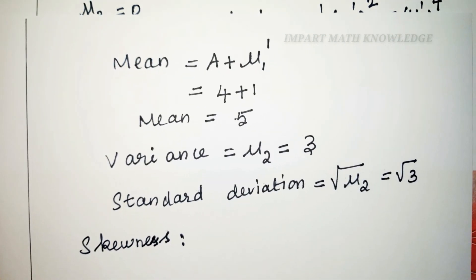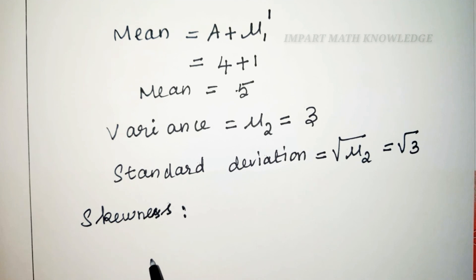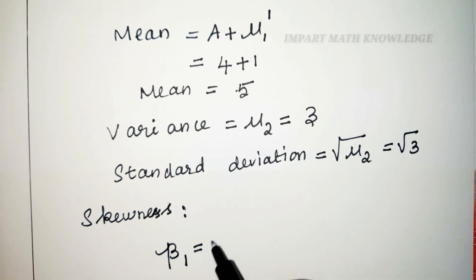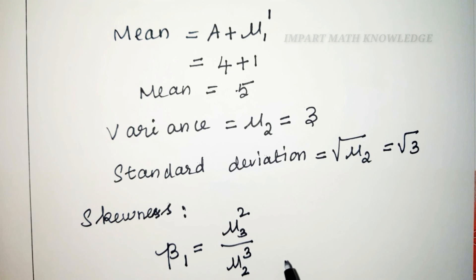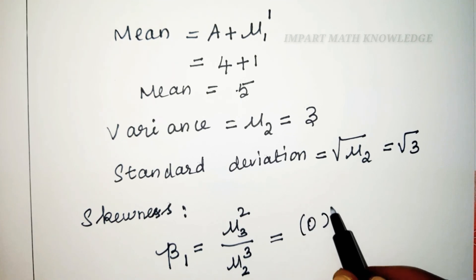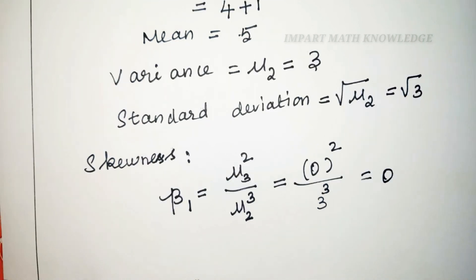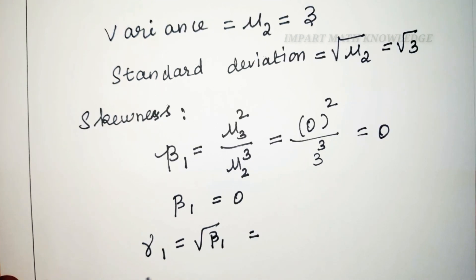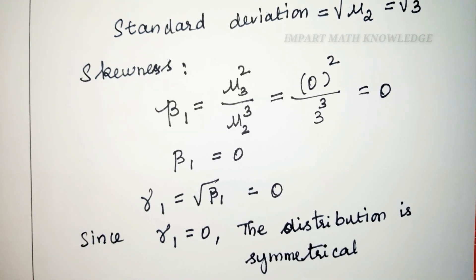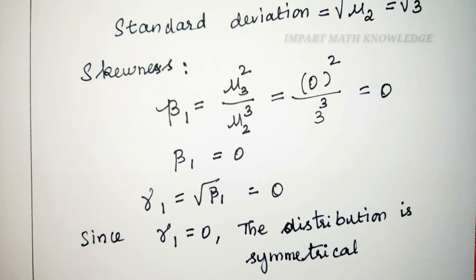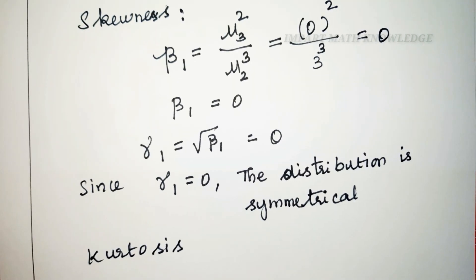Next, skewness based on moments: beta1 equals mu3 squared divided by mu2 cubed. Here mu3 is 0, so beta1 equals 0 squared divided by 3 cubed equals 0. Gamma1 equals the square root of beta1 equals 0. Since gamma1 equals 0, the distribution is symmetrical.